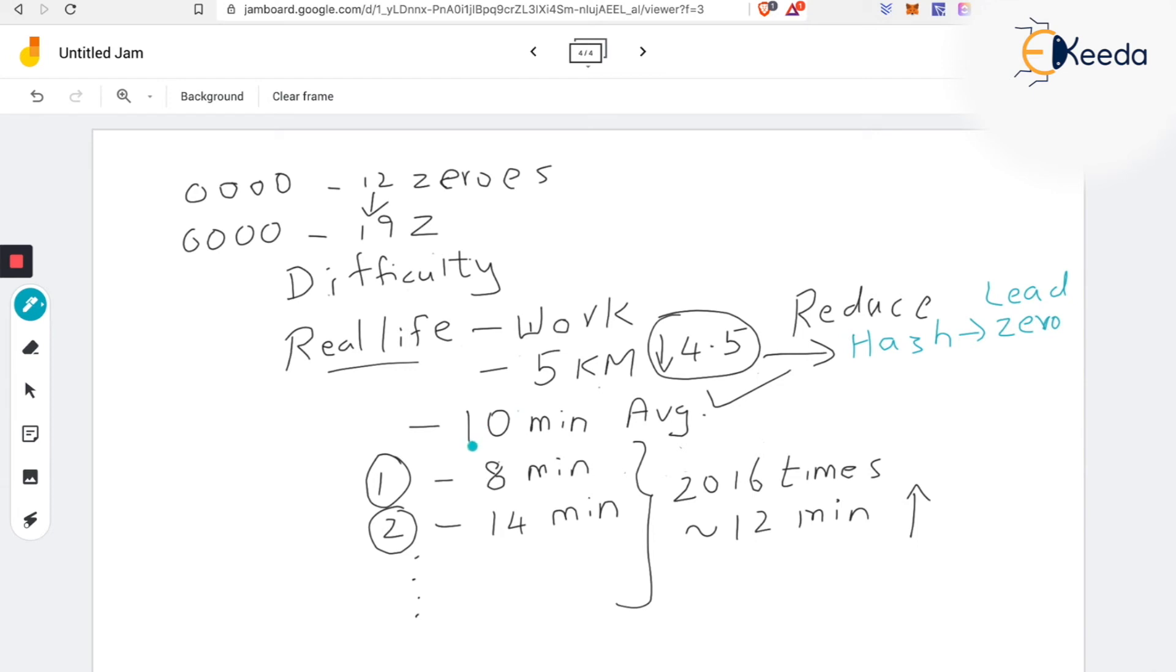If the same scenario happens, the first block comes in 10 minutes, the second block comes in 8 minutes, third block comes in 14 minutes and the like. I will try for 2016 times, this is set by Satoshi. After 2016 times I will check the average. In the past 2016 attempts, when did they come? What is the average time? If it is more than 10 minutes, I will reduce the difficulty. How can I reduce the difficulty? Reduce the number of zeros. Let's say it is 20 zeros, I will bring it to 19. That is how difficulty is adjusted in the Bitcoin world.